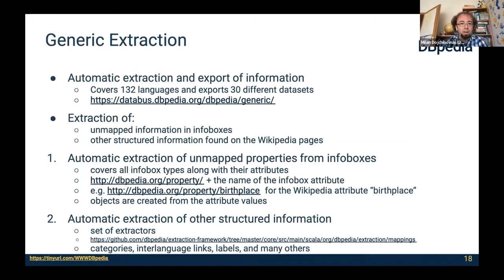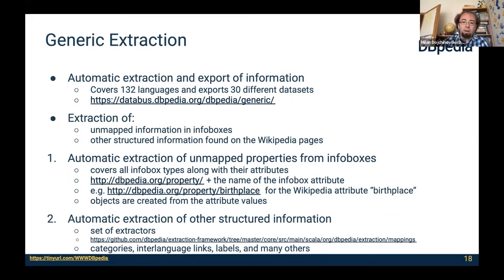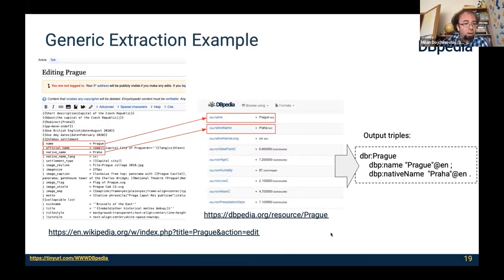The generic extraction is an automatic extraction aimed at coverage — extraction of unmapped information in infoboxes as well as other structured information found on Wikipedia pages, such as categories, labels, and interlanguage links. Here is an example where the property name for Prague, or native name Praha, is mapped to DBpedia triples within the namespace dbpedia-property (dbp): dbp:name Prague and dbp:nativeName Praha.